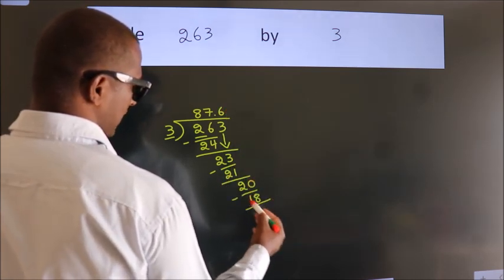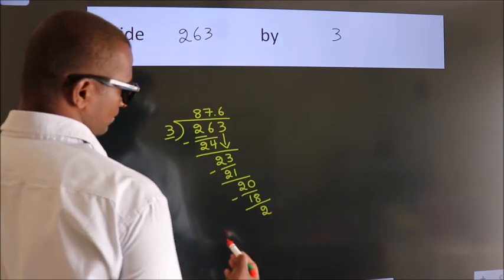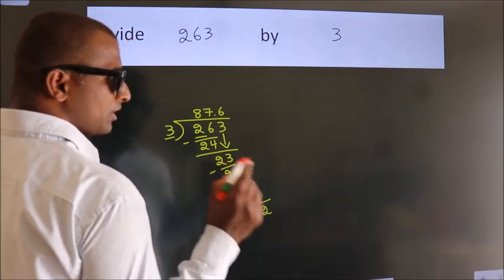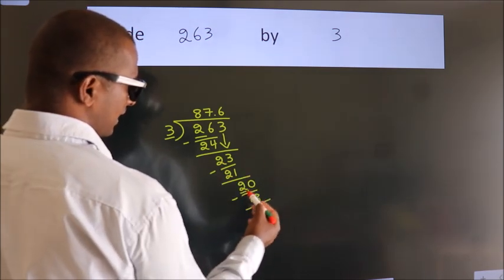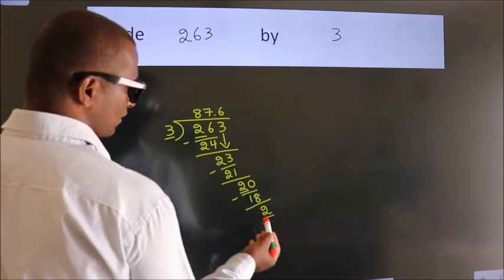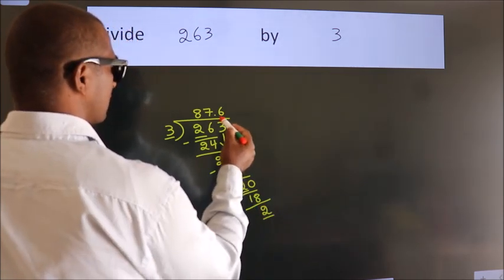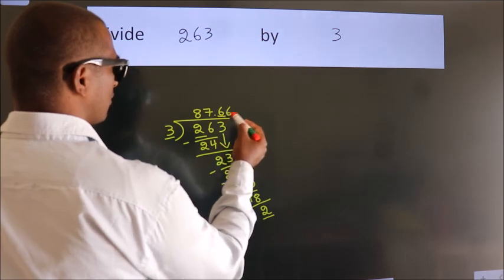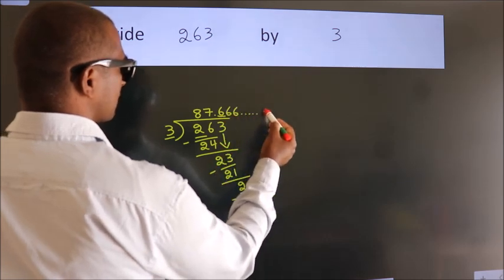Now, we subtract. We get 2. Now, you observe. We had 2 here. And we got 2 again. That means, this number keep on repeating.